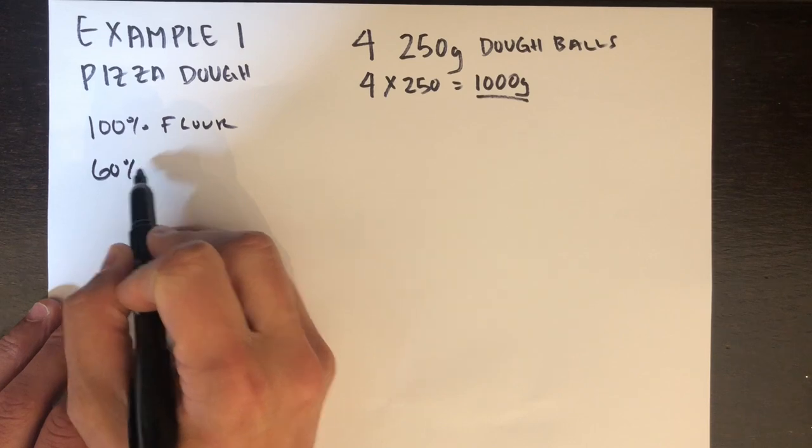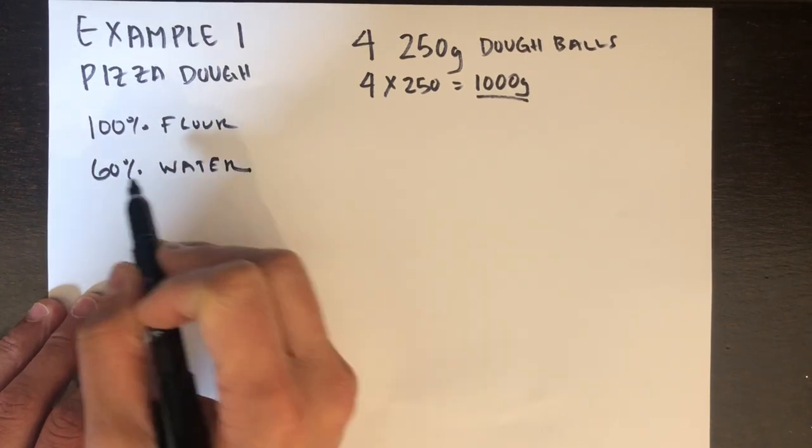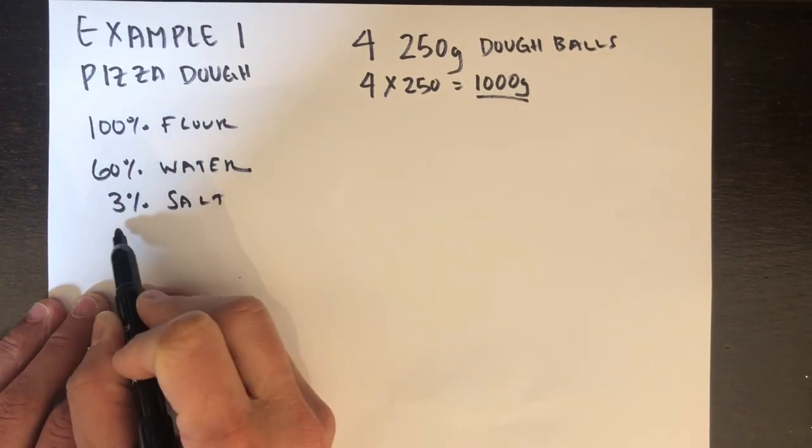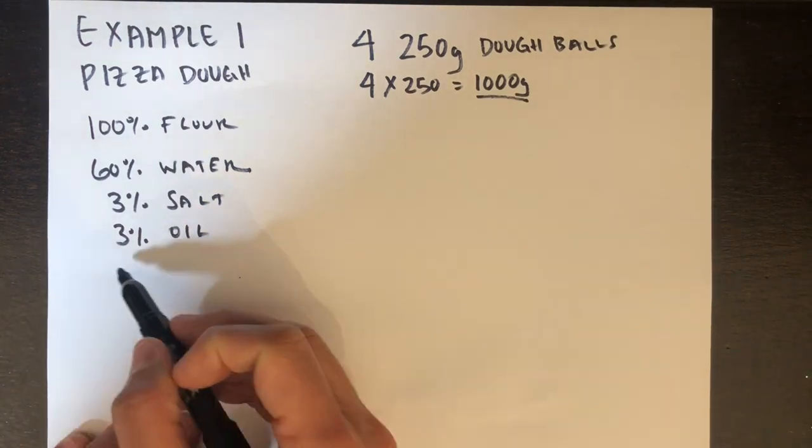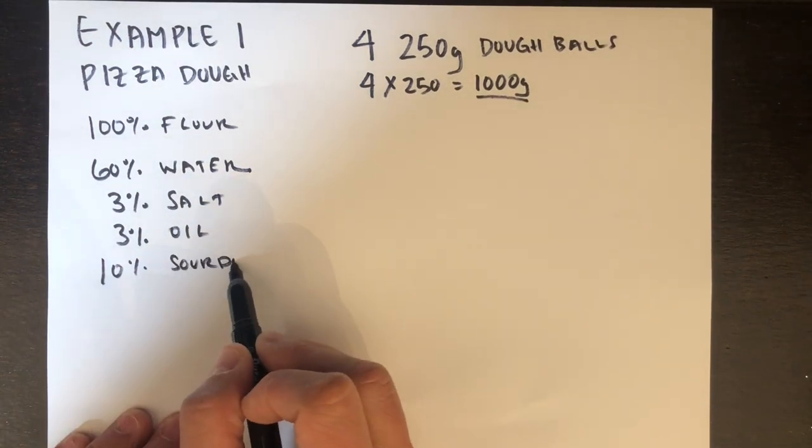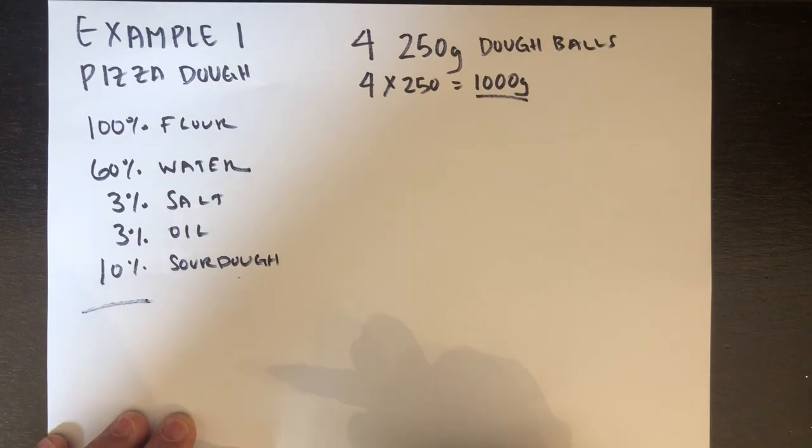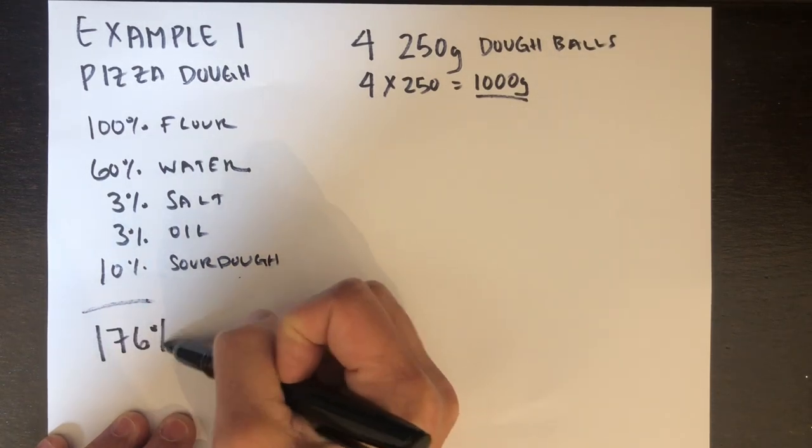You might see recipes like this in percentages. This is why percentages is awesome. I'm going to show you exactly how to use a recipe like this: 100% flour, 60% water, 3% salt, 3% oil and 10% sourdough to build a recipe and all the ingredients you need to make a thousand grams of dough.